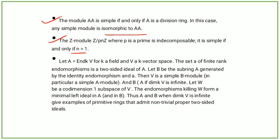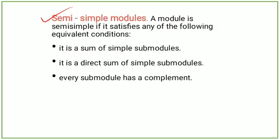Semi-simple modules. A module is semi-simple if it satisfies any of the following equivalent conditions: it is a sum of simple modules, it is a direct sum of simple submodules, or every submodule has a complement.